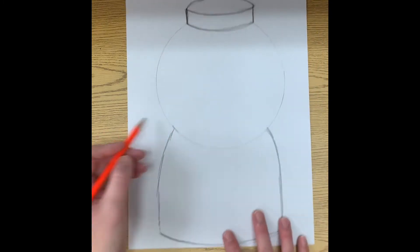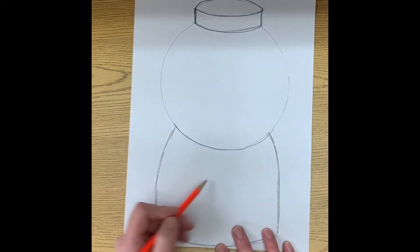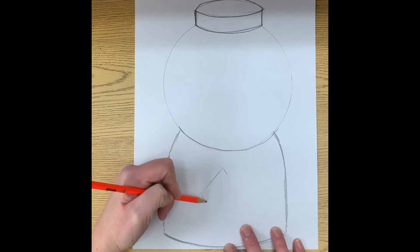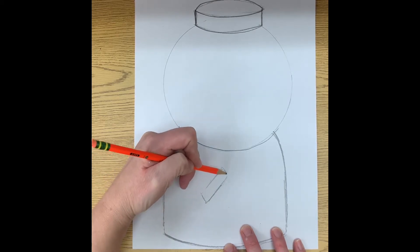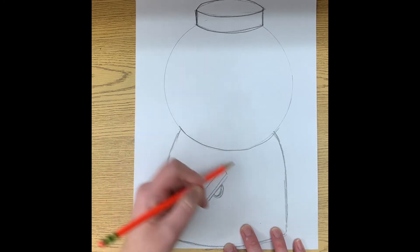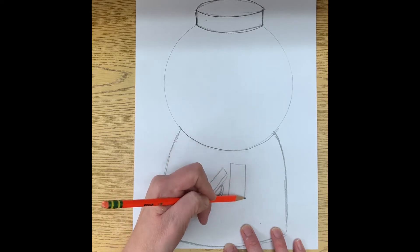Okay, and then we're going to add, you know, where the piece that you turn goes. And then of course, we got to have a coin slot.